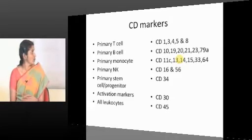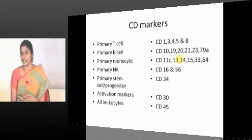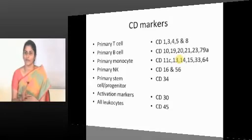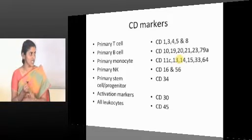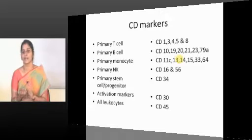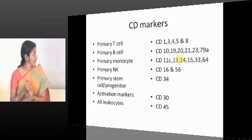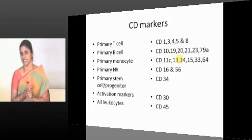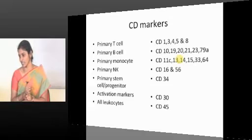Moving on to myeloid cell markers — the myeloid cell markers are CD14 and CD15. So CD13 and CD33 are monocytic markers, myeloid are CD14 and CD15, and natural killer cell markers are CD16 and CD56. What is CD16?